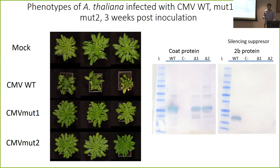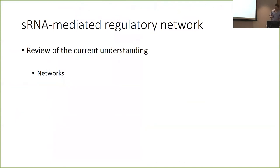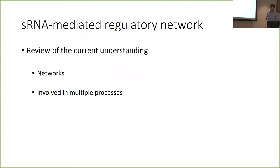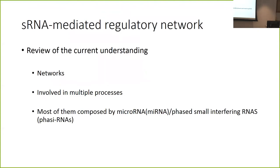This is our experimental system. I'm going to review what we know about small RNA regulatory networks in a bit more detail. A network is a set of nodes connected by a set of edges. The nodes correspond to RNAs — either small RNAs or transcripts — and the edges correspond to the interactions between the nodes. I've already shown that they're involved in multiple processes, and most of these networks are composed by pairs of microRNAs and phasiRNA small interfering RNAs.